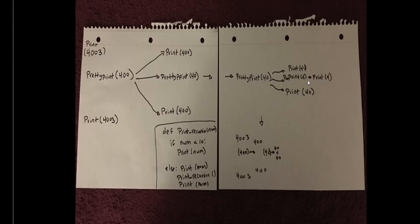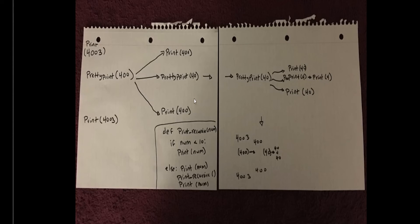Now we have to go backwards and unstack everything. The output of pretty print 40 is: 40, 4, 40. Taking that and replacing pretty print 40 inside pretty print 400, the outcome of pretty print 400 becomes: 400, 40, 4, 40, 400.